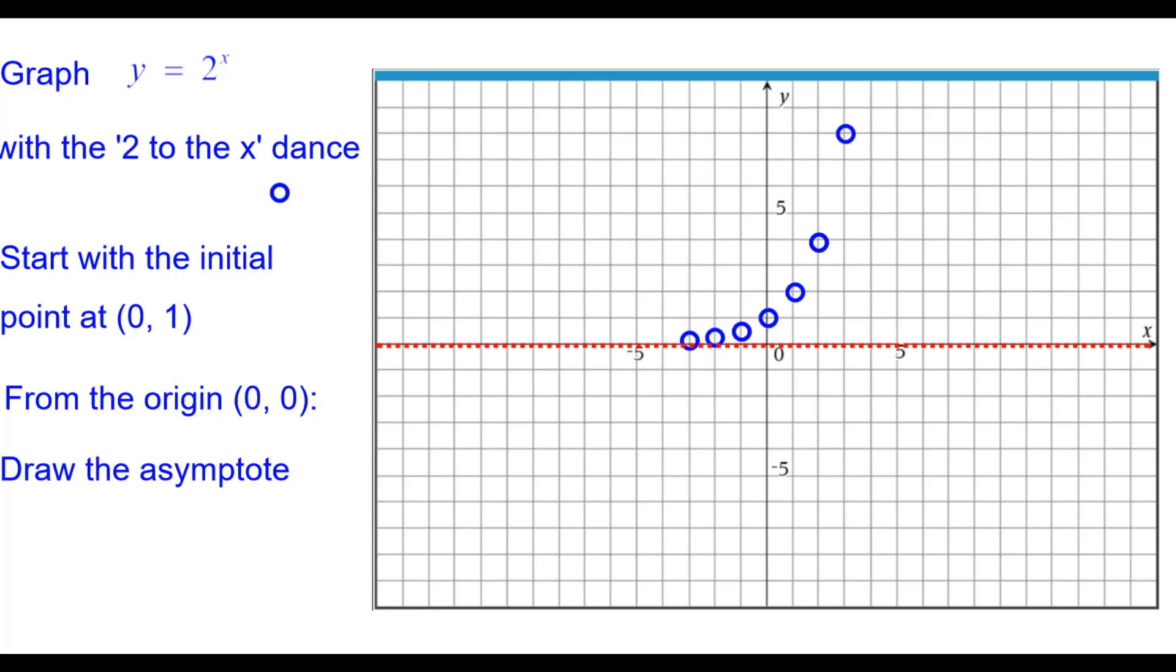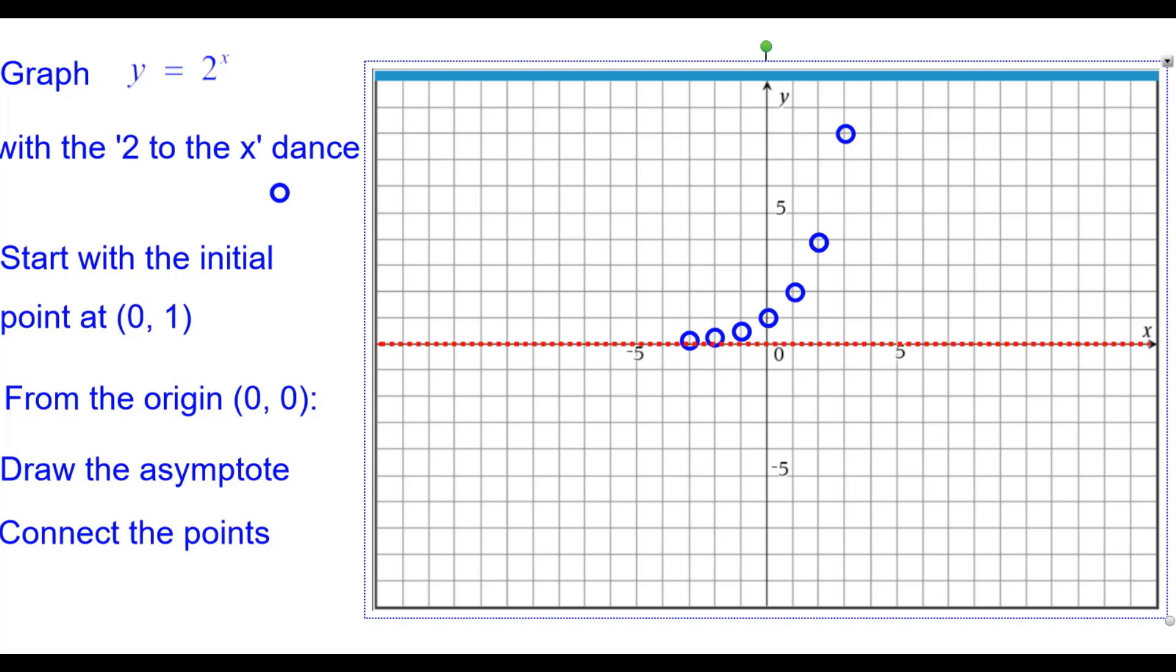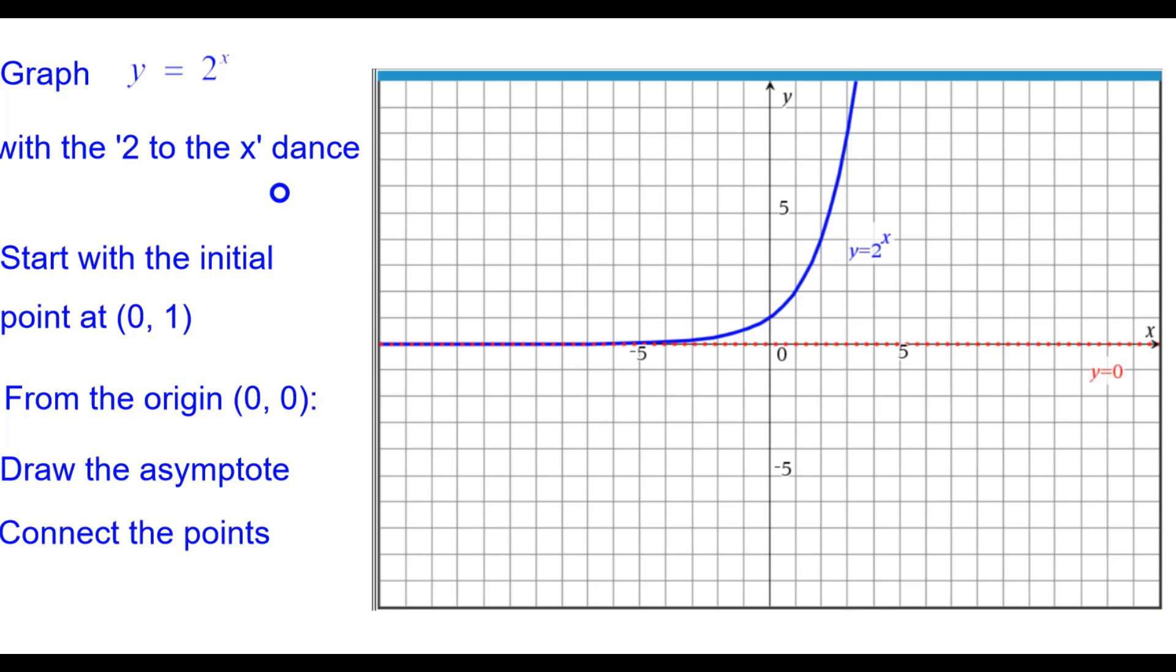Draw the asymptote which is the x-axis. Connect the points. Y equals 2 to the x.